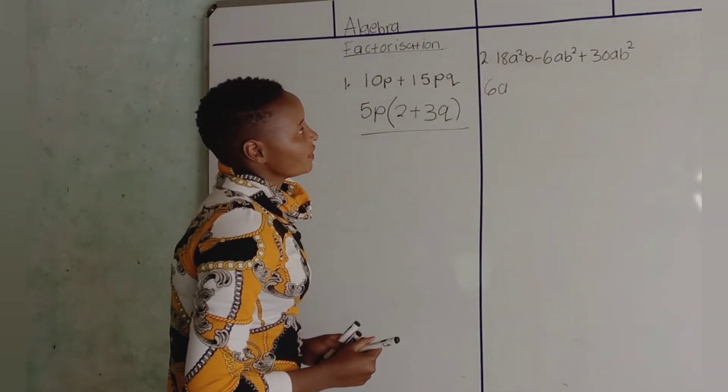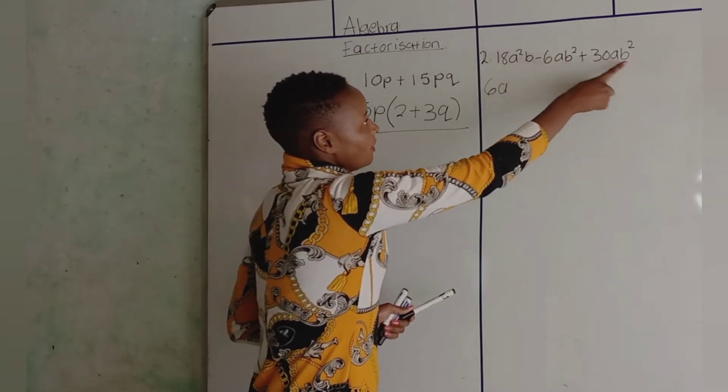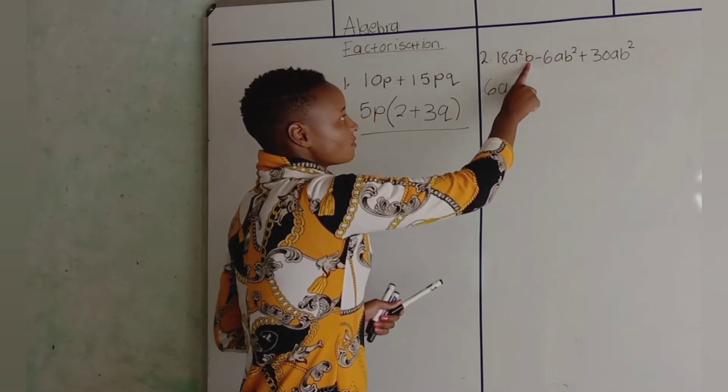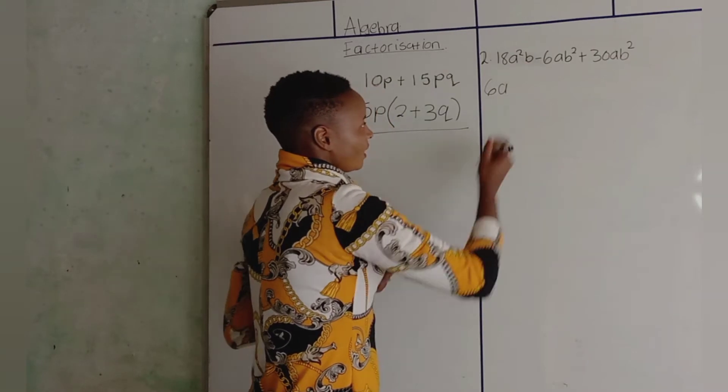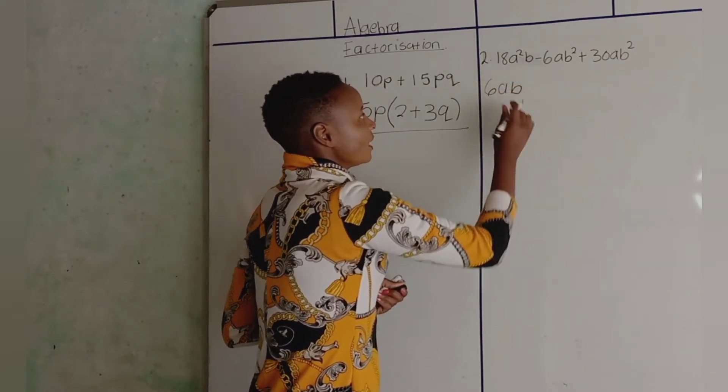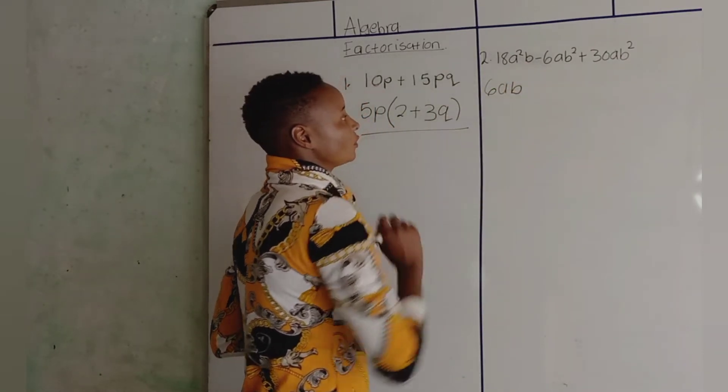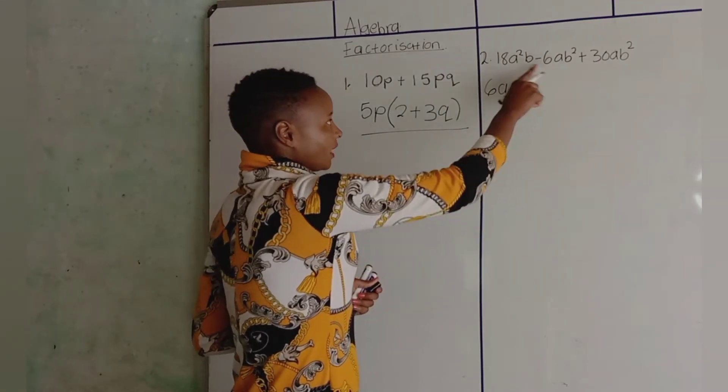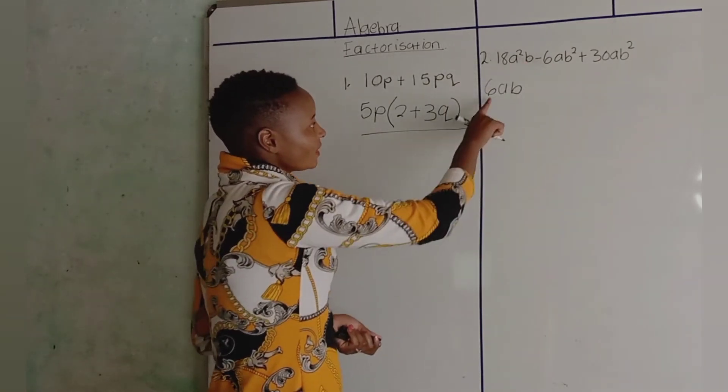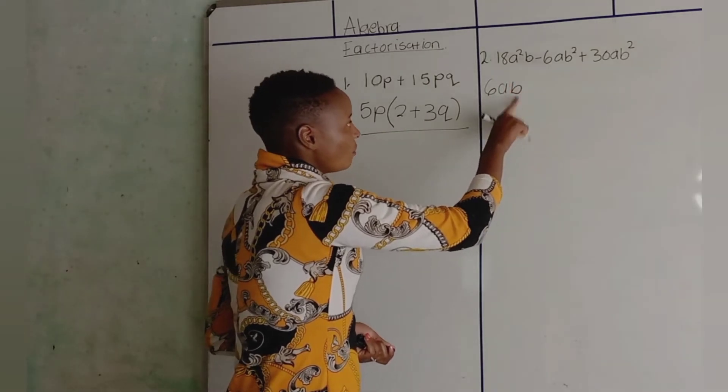And then B. It's not B squared, B squared. So, what's common is B. So take B. If you take B squared, you will be wrong. B squared can't enter where there's only B. So, 6AB is common.